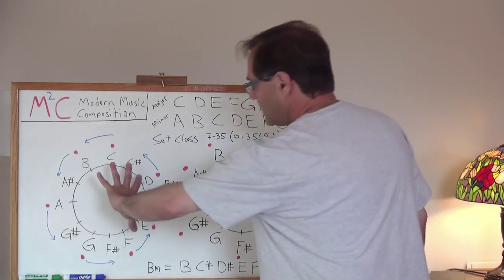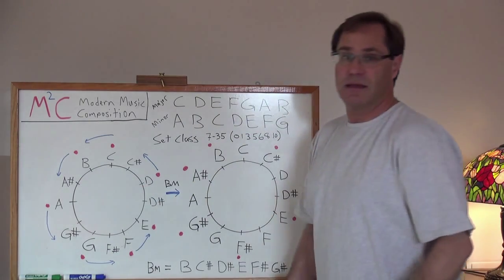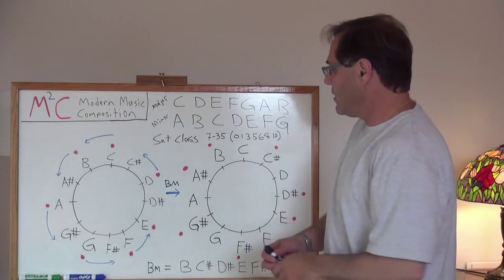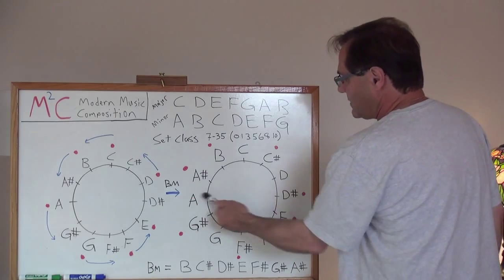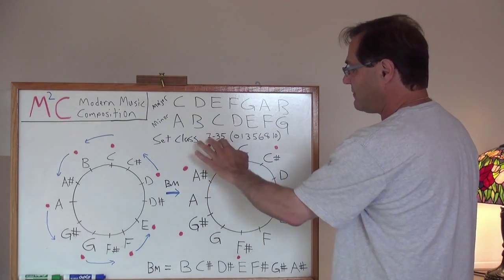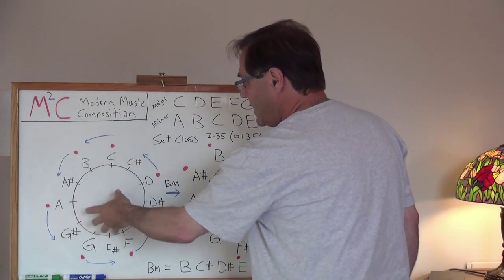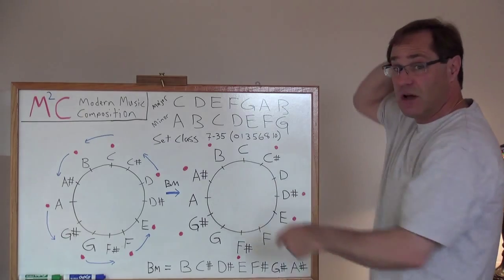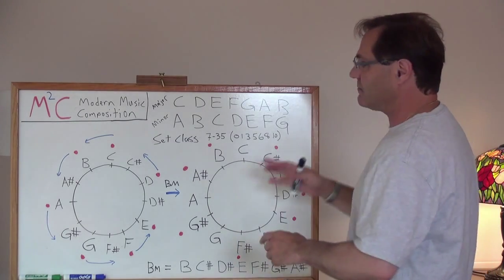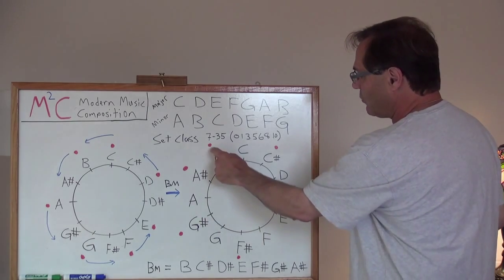Let's take and rotate this clock one semitone notch counterclockwise. Well, when we do that, and by the way, we're keeping set class 735 preserved. We're rotating each one of those tones a semitone. When we do that, we end up with this diagram.